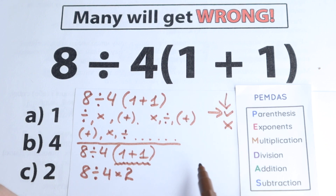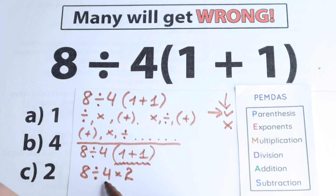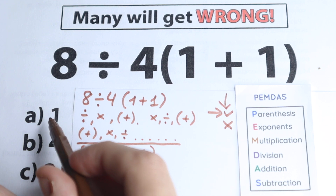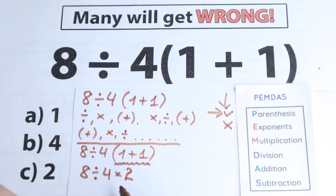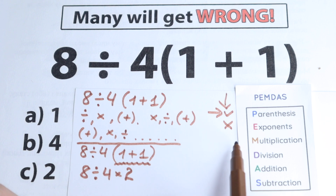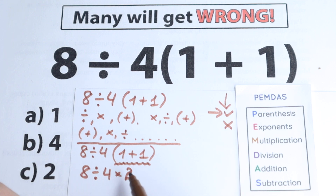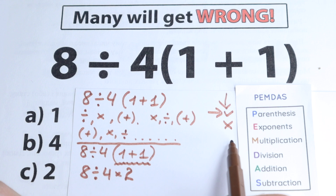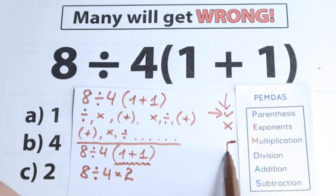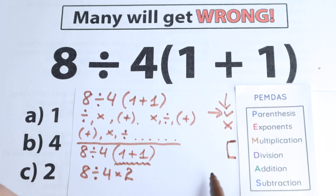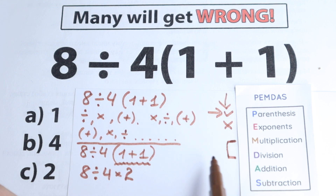Moving on to multiplication: a lot of students make the common mistake of thinking we need to multiply first. If we multiply first, we get 4 times 2 equals 8, then 8 divided by 8, which equals 1 — that's Option A. But according to PEMDAS, we need to look at multiplication and division as one common group.